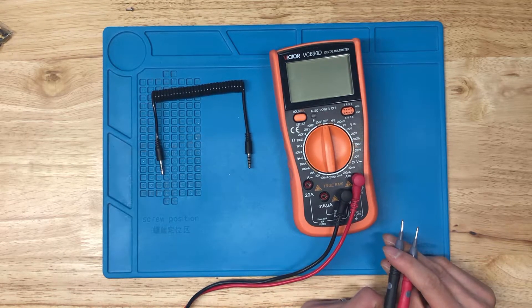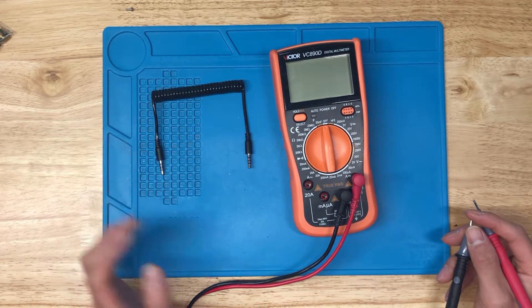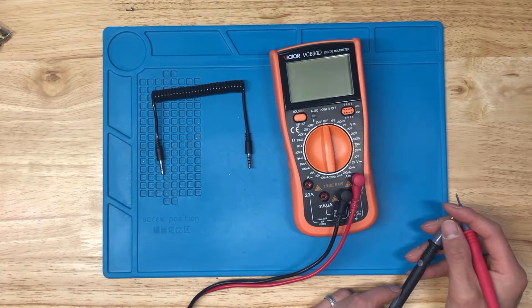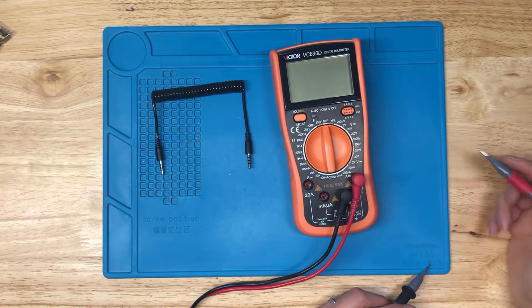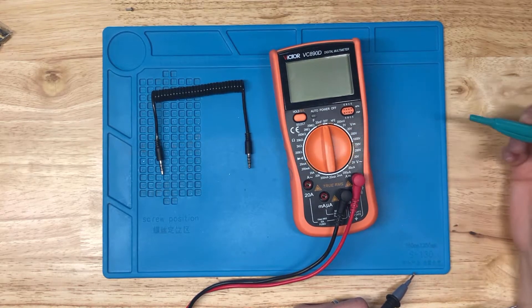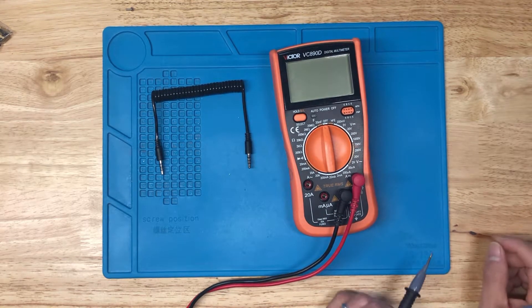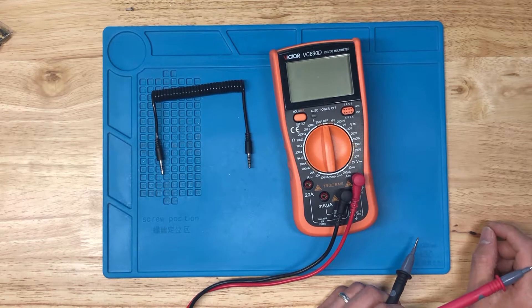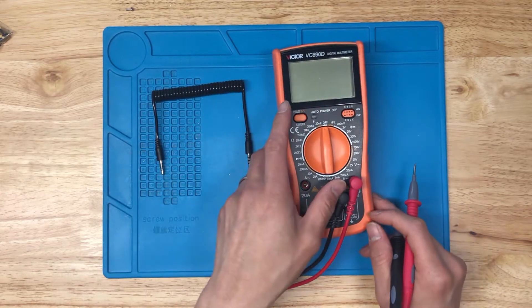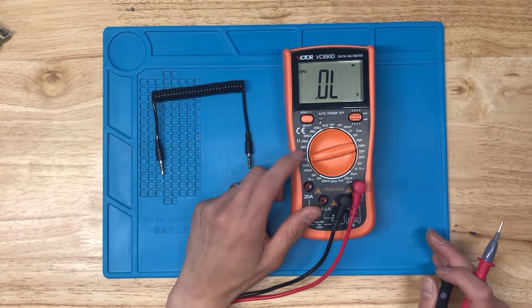Now the mode that we want to use for continuity checks is the beep mode. Not all multimeters will have a beep mode. Some will just be a diode mode, or failing that if there's no diode mode or beep mode, you can use resistance check. So the beep mode on here is right here. See that speaker-like icon right there? So I've turned it to beep mode.